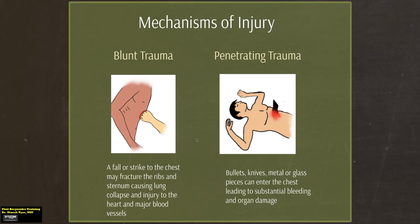We classify the mechanisms of injury as being either blunt trauma or penetrating trauma. Blunt trauma may be due to a fall or a strike to the chest region and may fracture the ribs or sternum, causing lung collapse and injury to the heart and major blood vessels. Penetrating trauma may be due to bullets, knives, metal, or glass pieces that may enter the chest, leading to substantial bleeding and organ damage.